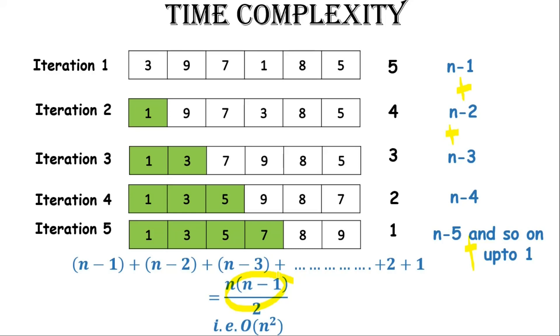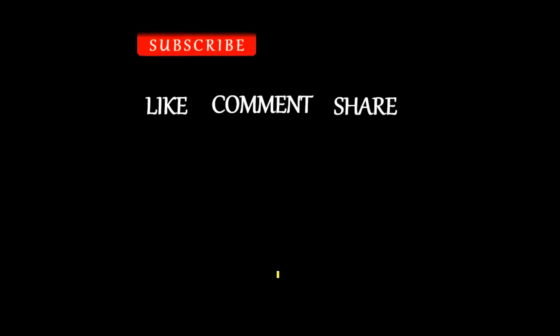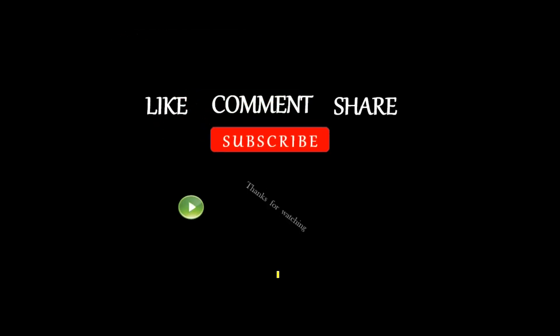So we can say that the worst case time complexity of selection sort is O(n²). Bubble sort has the same worst case time complexity of O(n²). That is all for today — thank you very much for watching this video.